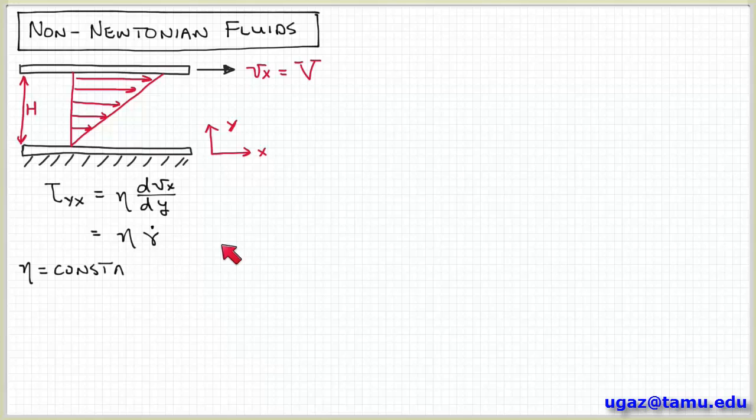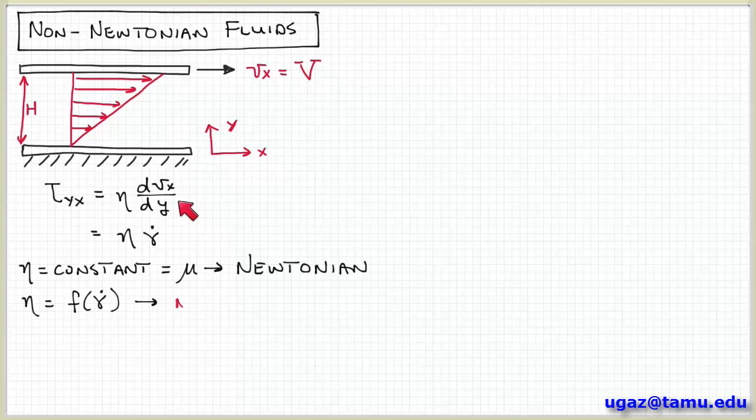So again, just to remind you, if the coefficient of viscosity, which is the proportionality constant between stress and velocity gradient or shear rate, if that viscosity coefficient is constant, we often denote it with the Greek letter mu. And we say that's a Newtonian fluid or the fluid exhibits Newtonian behavior.